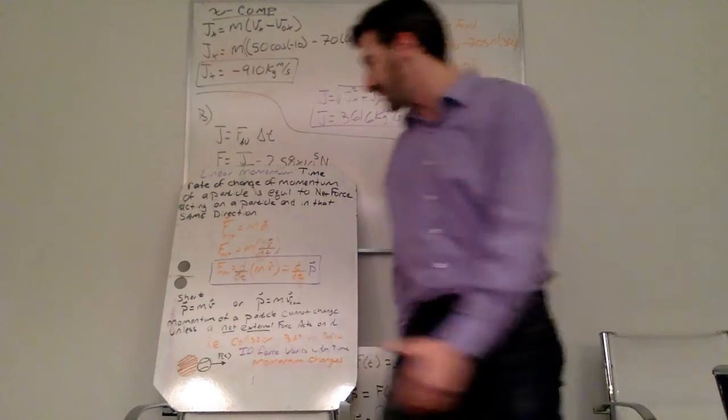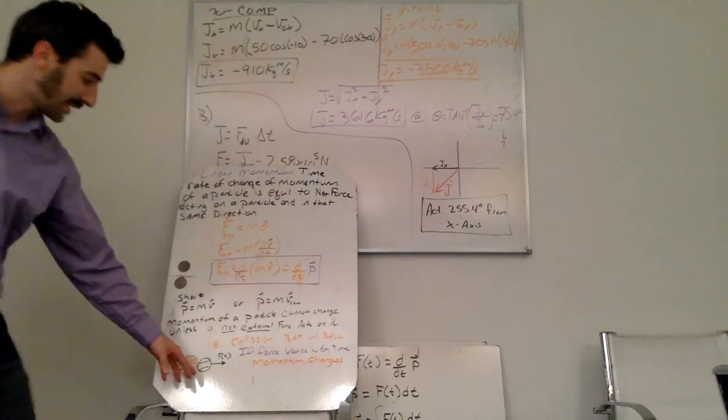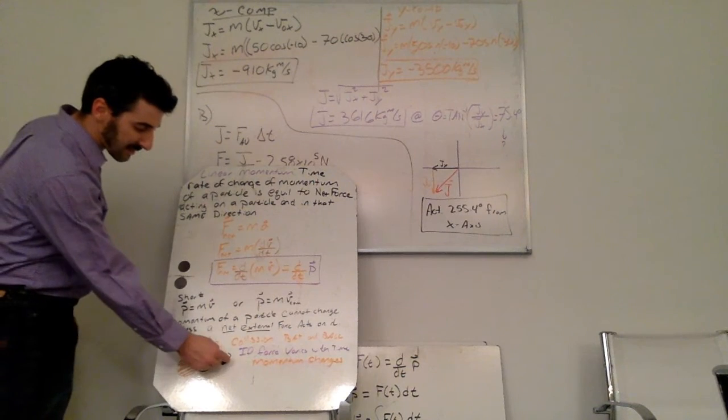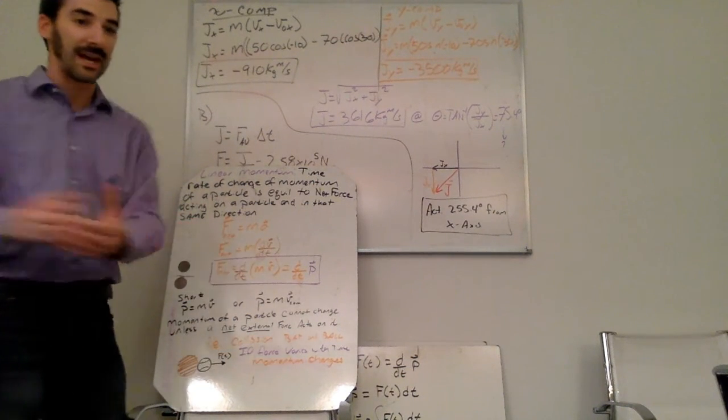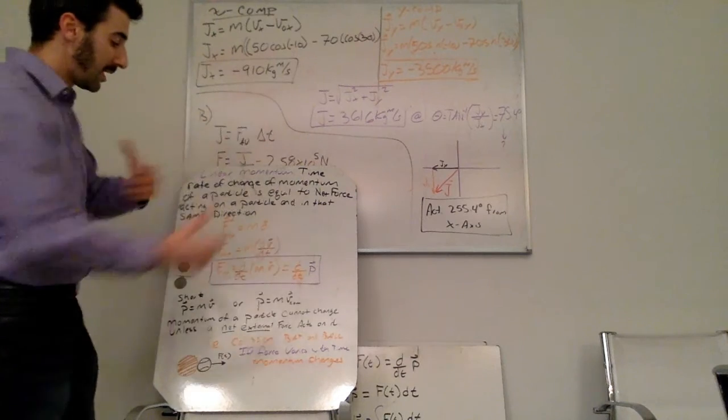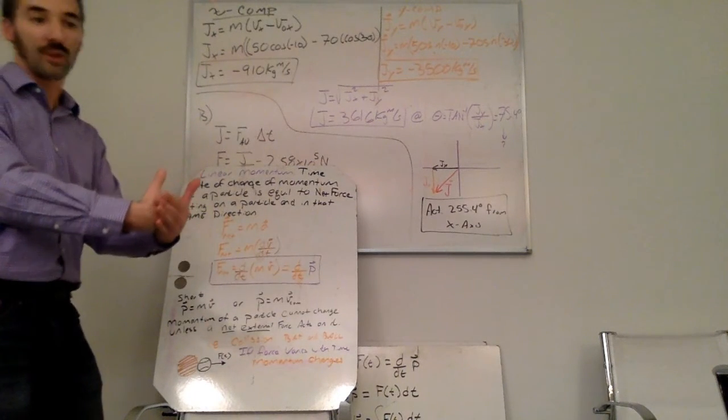So down here I have an example of a baseball bat hitting a baseball where the force is a function of time. In other words, that collision as the bat comes through and hits the ball, the longer the ball is in contact or as the bat comes all the way through, that force is changing.